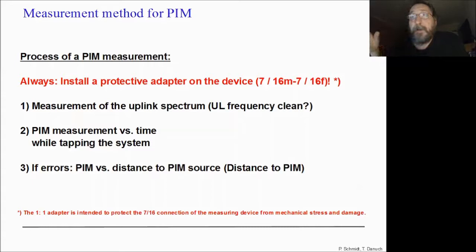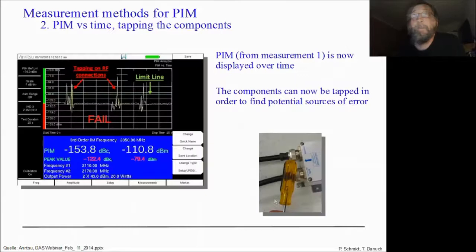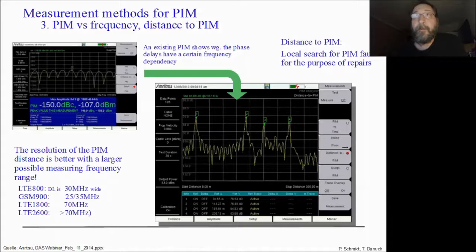In in-house systems it's the same — someone builds a metal rack near your antenna and this can also cause intermodulation. You can see this with distance-to-PIM. Tapping on the devices: if the measurement result is not varying, it's okay. If I have a failure, I can use distance-to-PIM measurement to locate it.